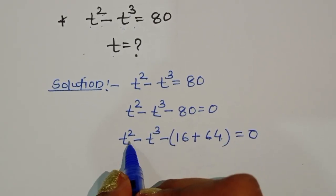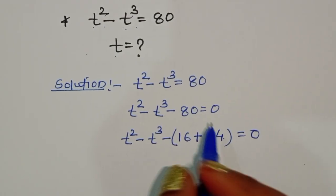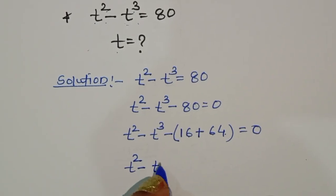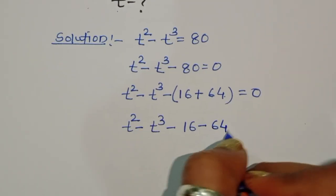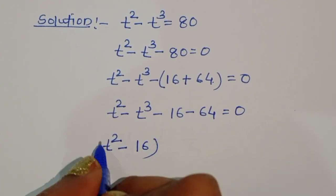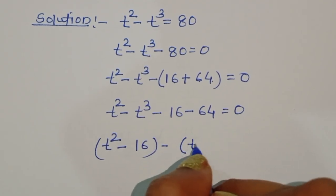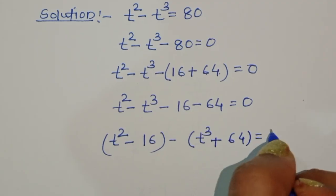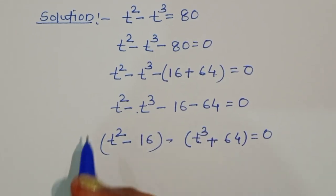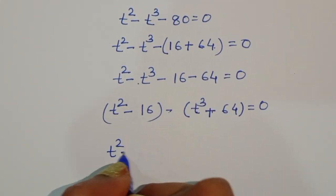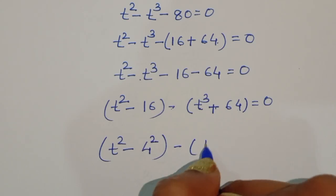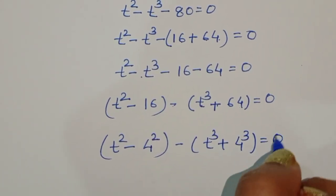We are taking 16 and 64 because we need the square form and cube form of 4. So we rewrite the equation as: t squared minus t cubed minus 16 minus 64 equals 0. Grouping: t squared minus 16, and then minus t cubed plus 64, equal to 0.